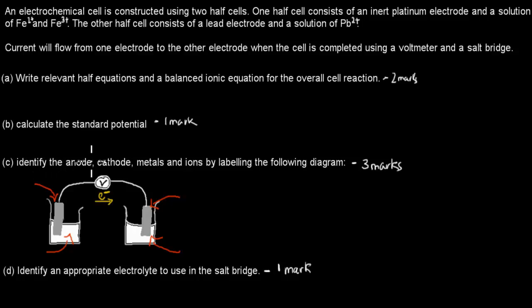Part C: Identify the anode, cathode, metals, and ions by labeling the following diagram. That's worth three marks. And Part D: Identify an appropriate electrolyte to use in a salt bridge. That was worth one mark. This actual diagram is the one which comes straight from the HEC exam question. I just drew it, as opposed to being able to get it from the HEC exam question. So this is the same one. It's exactly the same one.